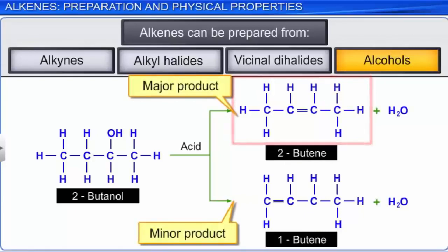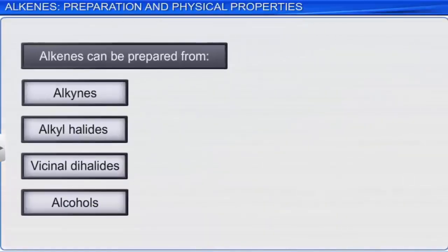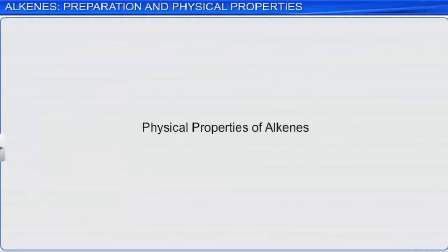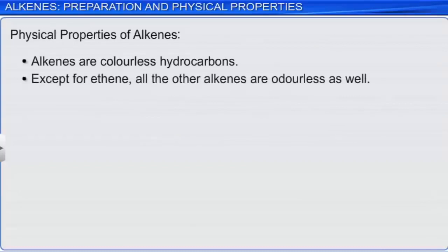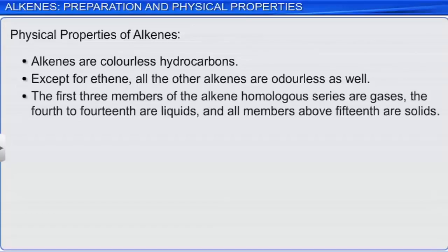Thus, we see that alkenes can be obtained by many different methods. Now let us look at the physical properties of alkenes. Alkenes are colorless hydrocarbons. Except for ethene, all the other alkenes are odorless as well. The first three members of the alkene homologous series are gases, the 4th to 14th are liquids, and all members above the 15th are solids. Being non-polar compounds, alkenes are insoluble in water but soluble in non-polar solvents like benzene and petroleum ether.